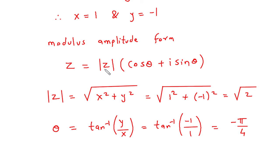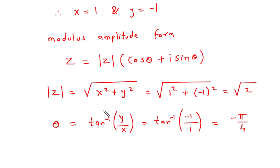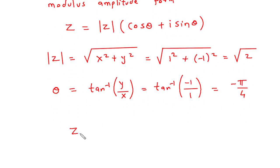Now we will substitute the value of magnitude of z and the value of theta. Therefore z equals square root of 2 times, in brackets, cosine of minus pi by 4 plus i sine of minus pi by 4.